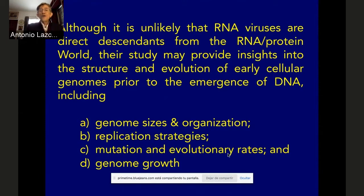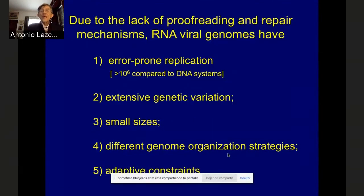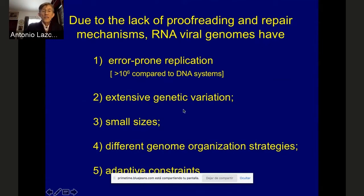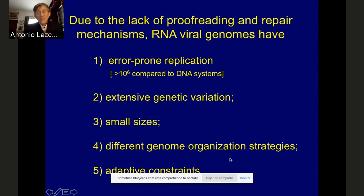One basic trait of RNA genomes — we are all fully aware of this because of the current pandemic — is that due to the lack of proofreading and repair mechanisms, RNA viral genomes typically have error-prone replication. Typically, the rate of point mutations is one million times higher than what we see in DNA systems. This results in extensive genetic variation in rather small genome sizes, because if you have too many mutations, you cannot keep the genetic identity during replication. We see different genome organization strategies in different types of RNA viruses, and this translates into a number of adaptive constraints.